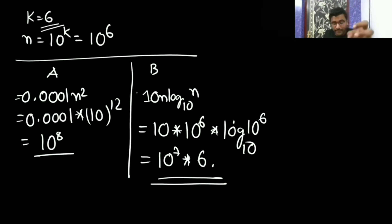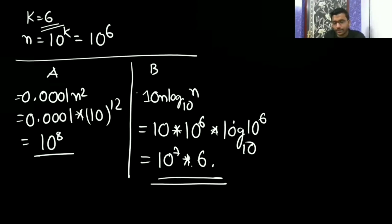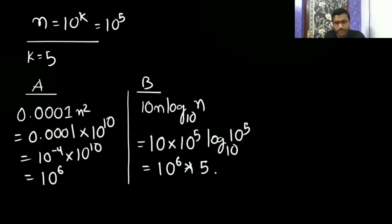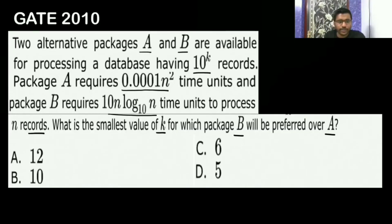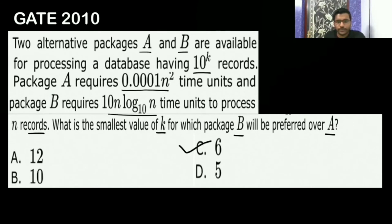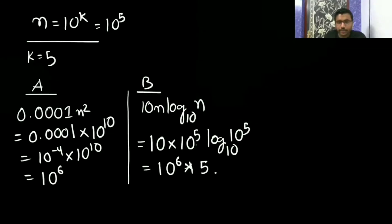So here I am assuming that N, the number of records, is 10 to the power k, and substituting accordingly. By using elimination, we can eliminate option D. Option C is going to be your correct answer. Anyone still having any doubt, please let me know — is it clear to all of you?